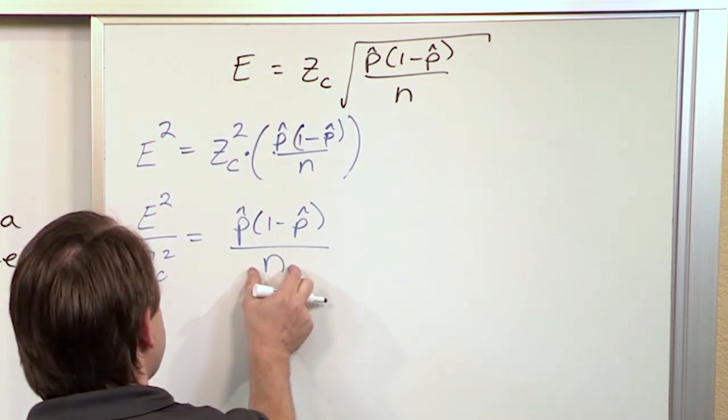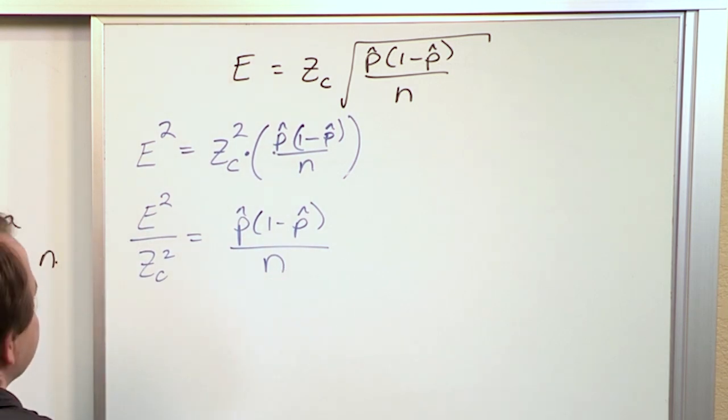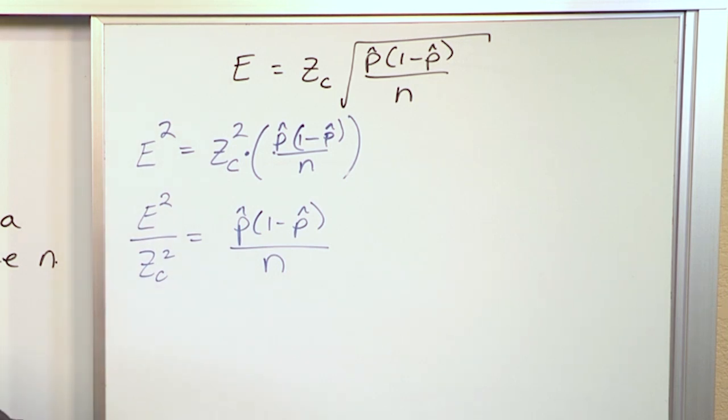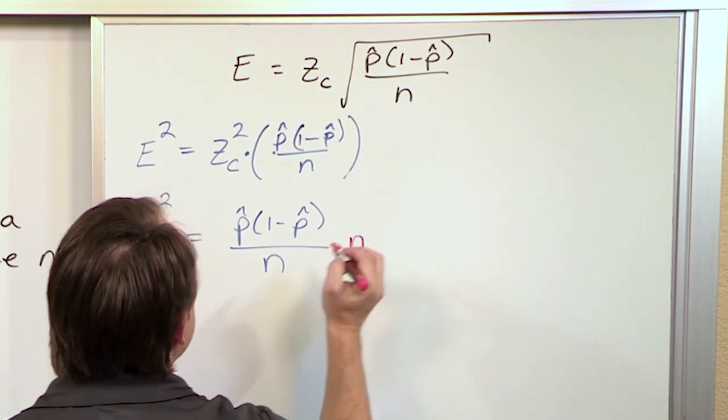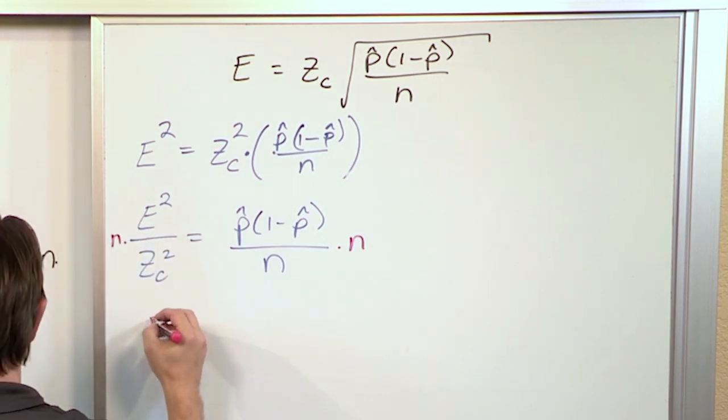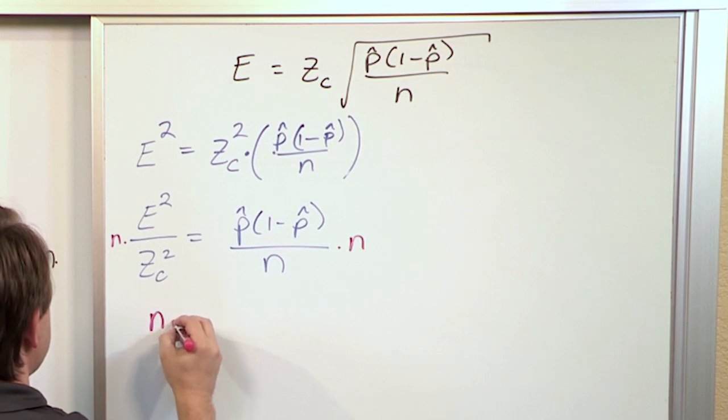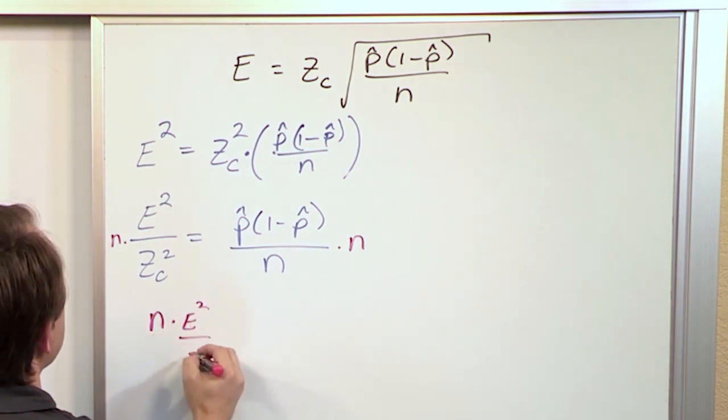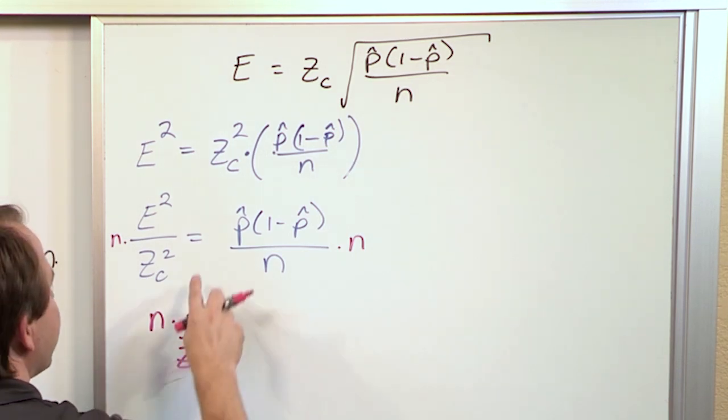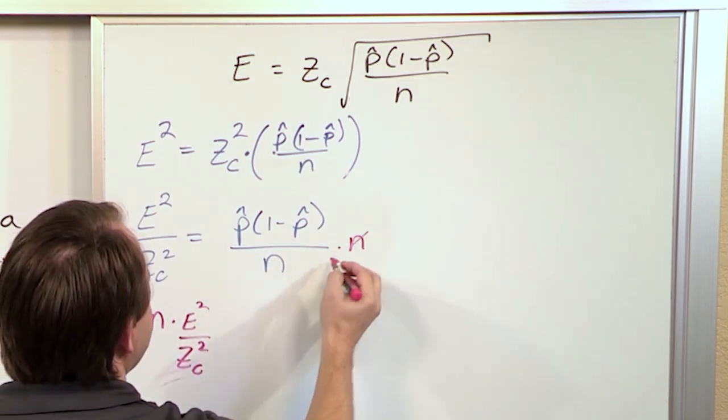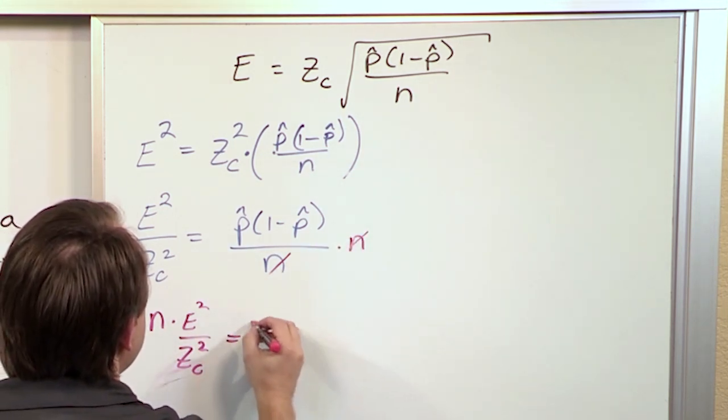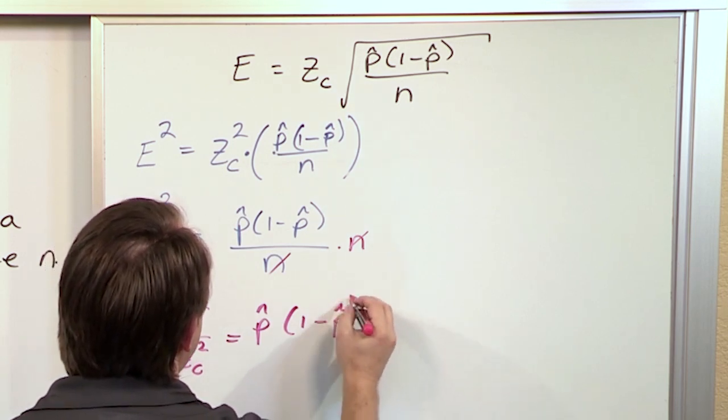Now we want to solve for n, and the easiest way is to multiply both sides of this equation by n. So we're multiplying the right by n and the left by n. On the left, we have nE²/z_c², and on the right-hand side, these n's cancel. So what you have is p̂(1-p̂).